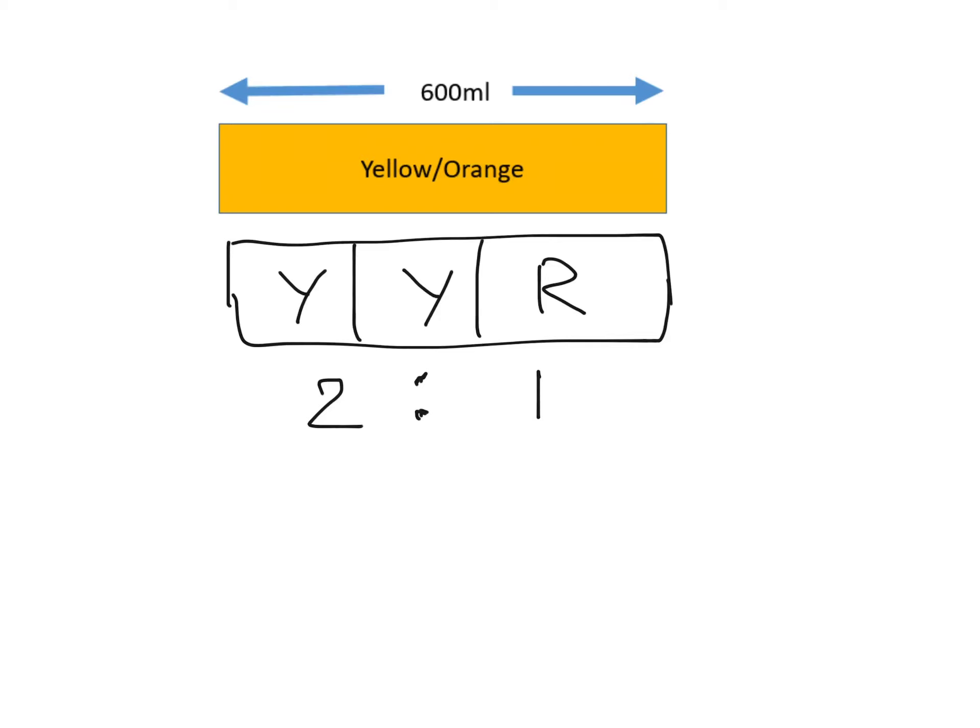So if I have 600 ml of yellow-orange paint, I want to know how many ml of red paint and how many ml of yellow paint it will take to make yellow-orange. So we need to split this up. We have 600 ml for the whole amount.